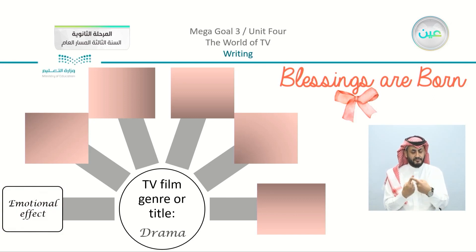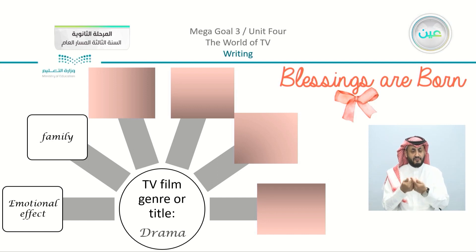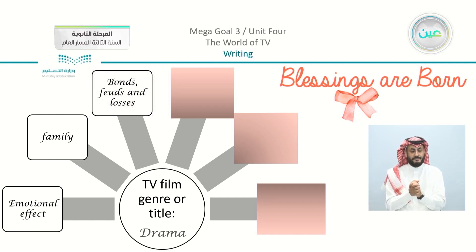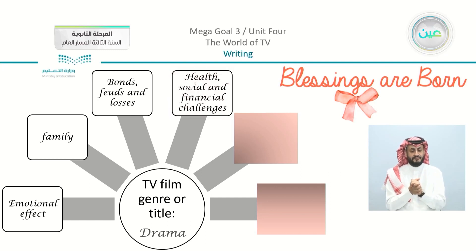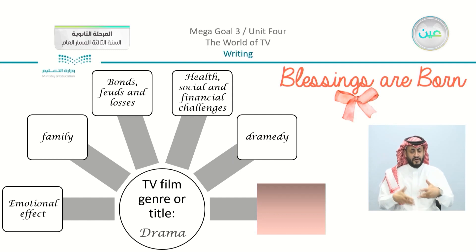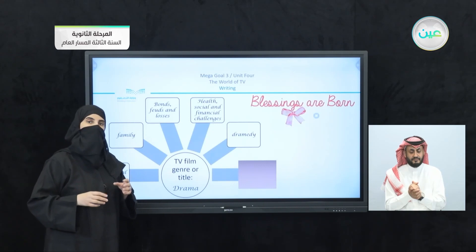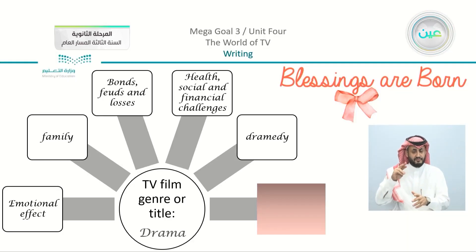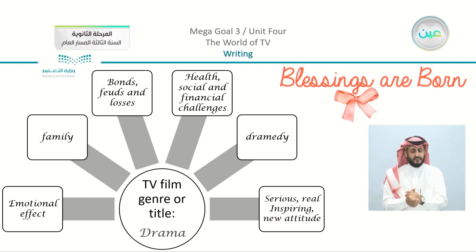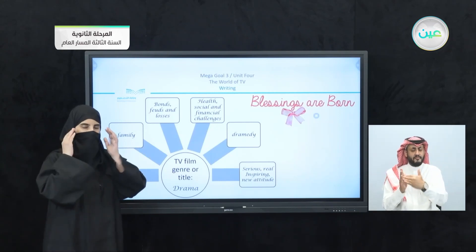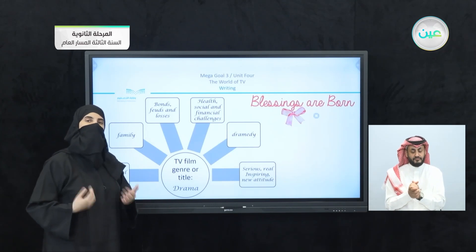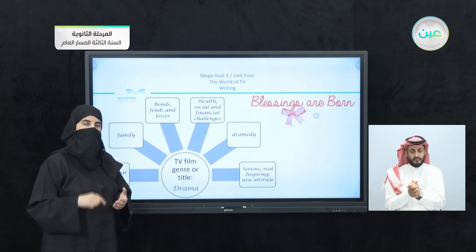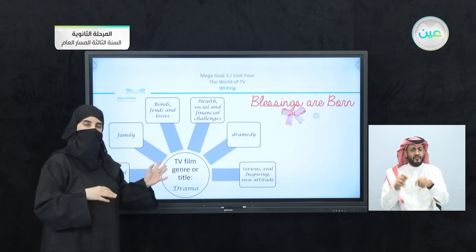When I think about my movie, these are the basic parts of the formula: first, emotional effect — my movie has an emotional effect. Also, there is something about family. We have bonds, feuds, and losses. Then health, social, and financial challenges. Then dramedy — which is actually two genres combined: drama and comedy together. And the last part is going to be: serious, real, inspiring, new attitude. These are the parts I have in mind that I am going to write about in my essay. I have to make sure while writing that I apply all of these parts from the chart.